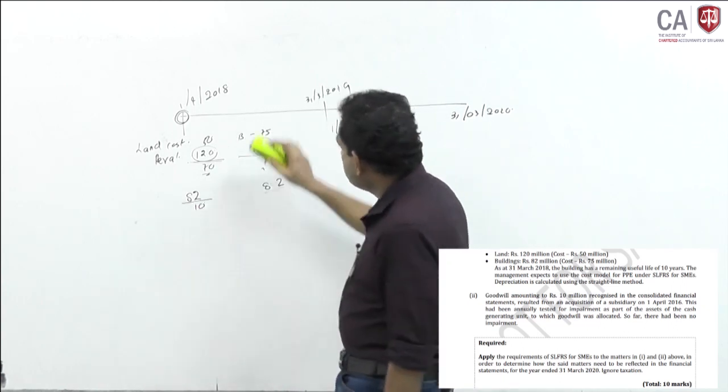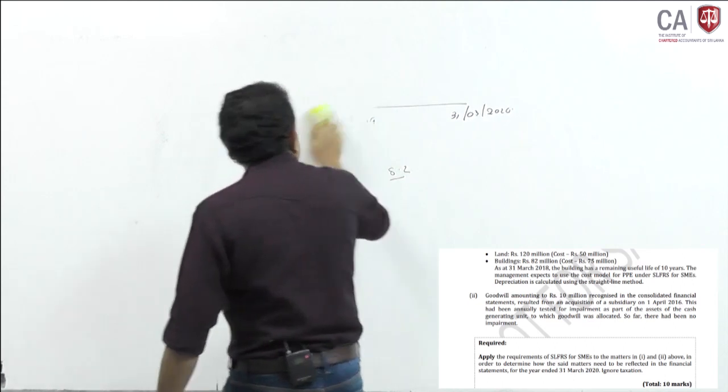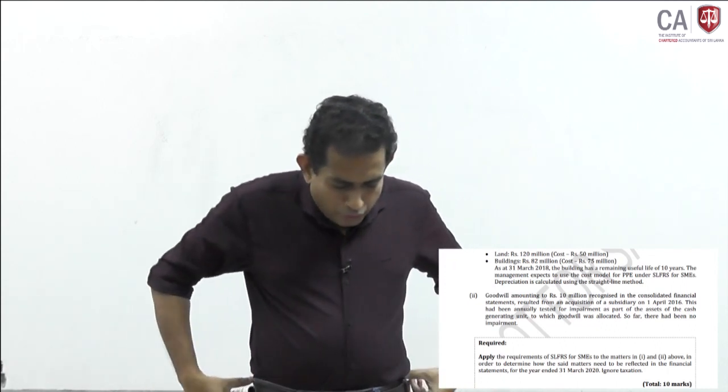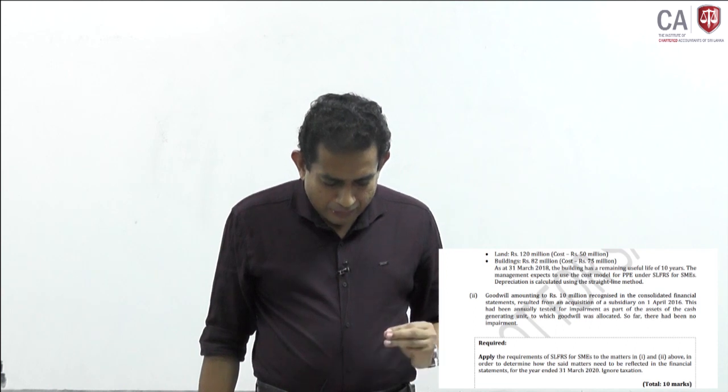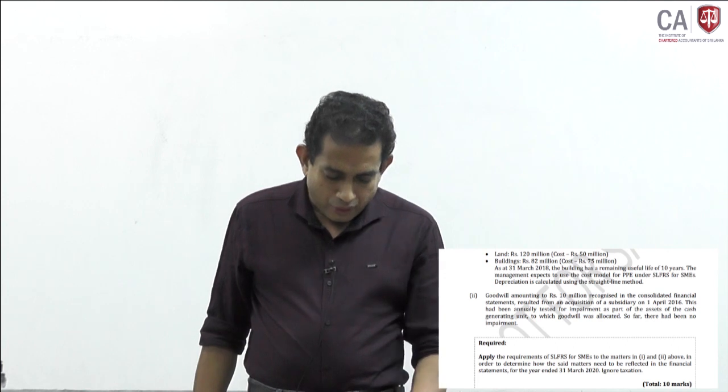Part 2 of question 2: Goodwill of 10 million rupees is recognized in the consolidated financial statements from an acquisition of a subsidiary on 1st April 2016. This had been annually tested for impairment as part of the cash generating unit assets. So far there had been no impairment required. If you go to the SLFRS for SME book under the business combinations section, you need to keep your books tagged for quick reference.